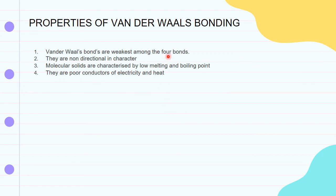Now for the properties of Van der Waals bonding: Van der Waals bonds are the weakest among the four types of bonds. They are non-directional in character. Molecular solids are characterized by low melting and boiling points. They are poor conductors of electricity and heat.